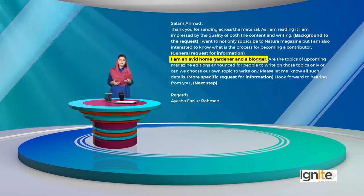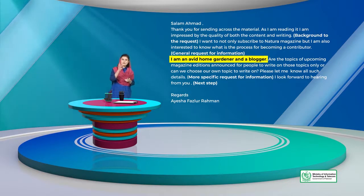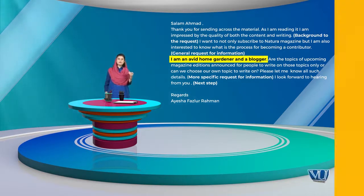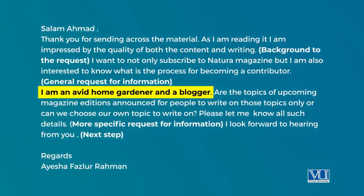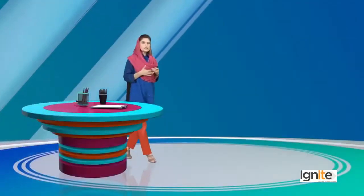There is one thing to highlight regarding sequence. The line 'I am an avid gardener and a blogger' is written in the wrong place in the original. It should be moved to the beginning to justify why you want to subscribe and write — because you are interested in gardening and because you are a blogger, you have these two relevant skills. So that sentence belongs with the second paragraph to maintain logical flow.